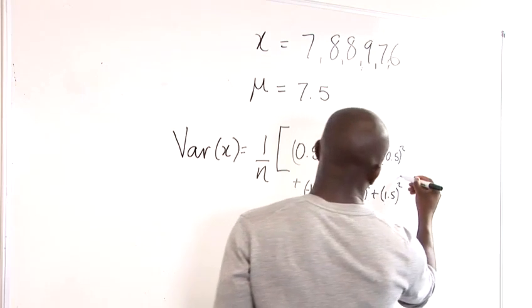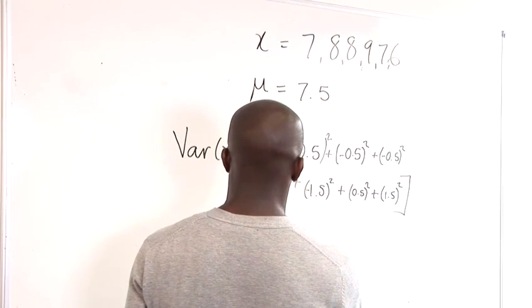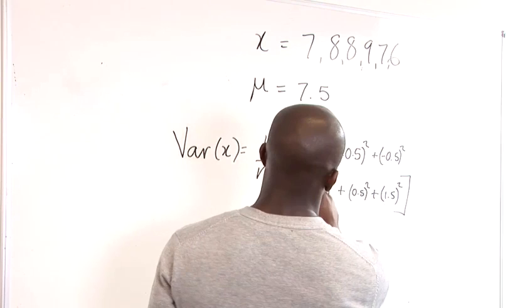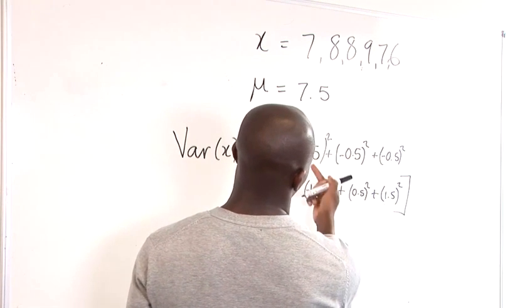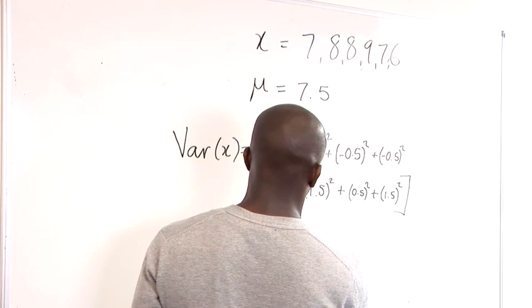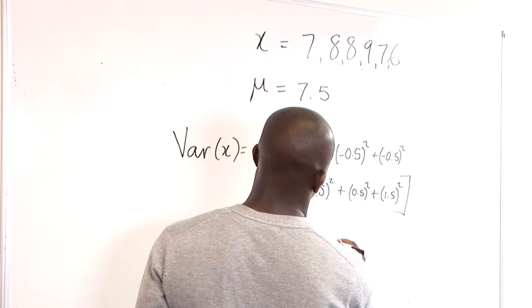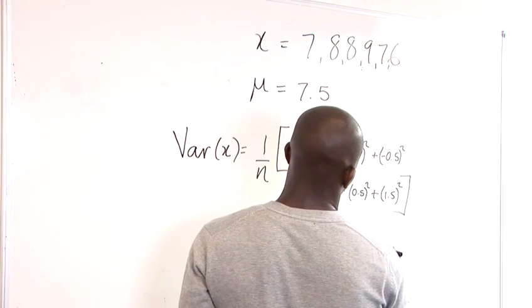Okay, so all of these, once added up, will give us our variance, and obviously divided by n. So we've got a half squared, so that's just a half times a half, which is a quarter, so that's 0.25, we've got again 0.25.